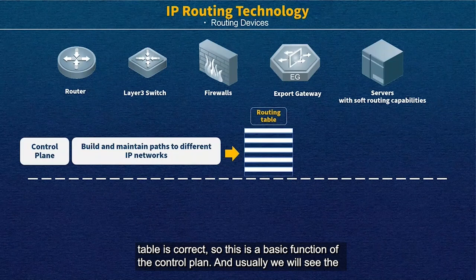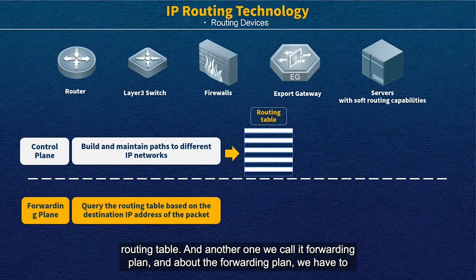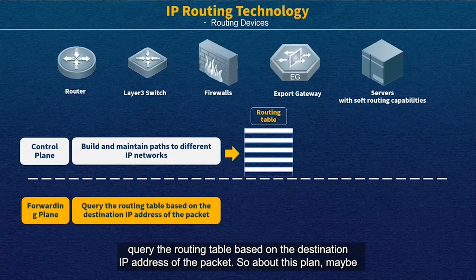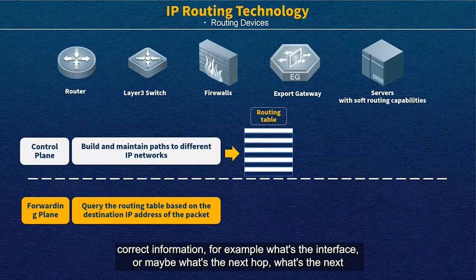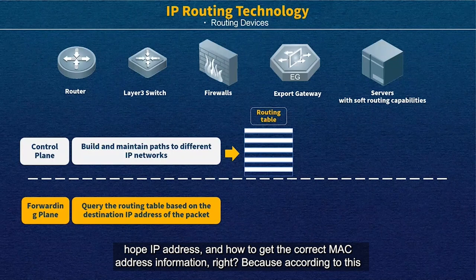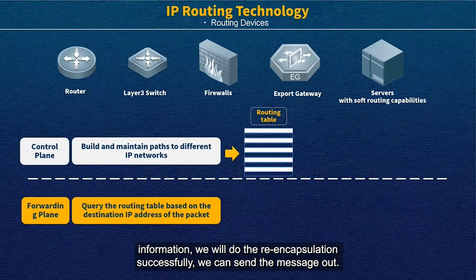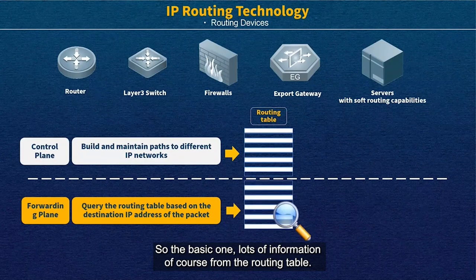We will look at the routing table. Another one is called the forwarding plane. About the forwarding plane, we have to query the routing table based on the destination IP address of the packet. We will directly take the destination IP address to match the forwarding table and find the correct information — for example, which outgoing interface, what's the next hop, what's the next hop IP address, and how to get the correct MAC address information. According to this information, we will do the re-encapsulation successfully and can send the message out.